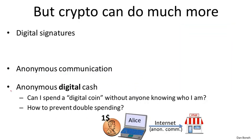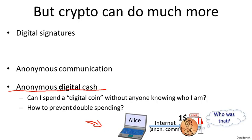One example is anonymous digital cash. In the physical world, if I have a physical dollar, I can walk into a bookstore and buy a book, and the merchant has no idea who I am. The question is whether we could do the same thing in the digital world. Alice might have a digital dollar coin and want to spend it at an online merchant, and we'd like to make it so that when she spends her coin at the bookstore, the bookstore has no idea who Alice is — providing the same anonymity we get from physical cash.